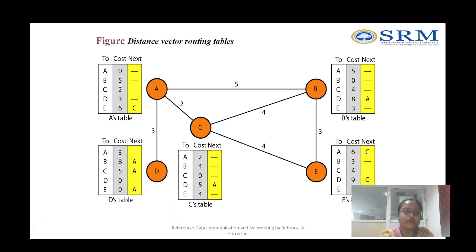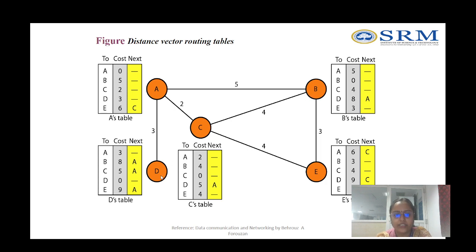This is the representation of A's routing table. For B's routing table: B to A costs 5, B to C costs 4, B to B is 0, B to E costs 3. B cannot reach D directly, so B goes through A then to D: 5 plus 3 equals 8. This is the routing table of B.